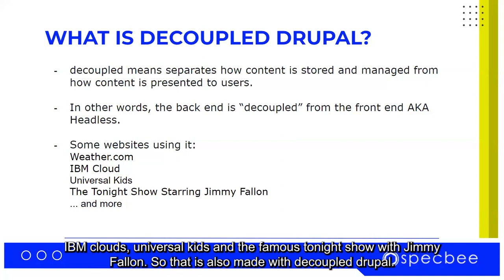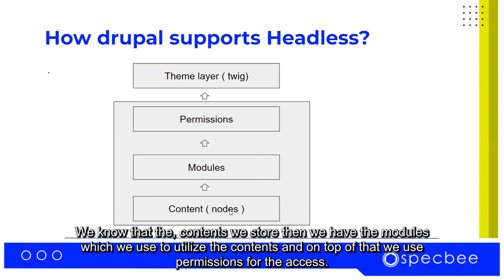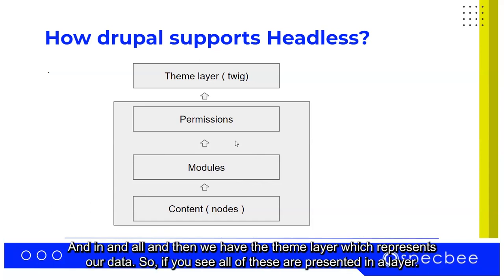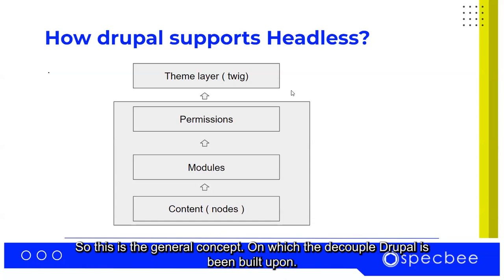That is also made with decoupled Drupal. Now let us see how Drupal supports this headless approach. If you see this diagram, we know that the contents we store, we have the modules which we use in order to utilize the contents, and on top of that we use permissions for access, and then we have the theme which represents our data. All of these are presented in layers. If we somehow cover the backend in a box, we can see that we can separate out the frontend layer out of Drupal. This is the general concept on which decoupled Drupal is built.